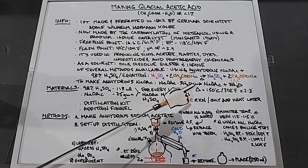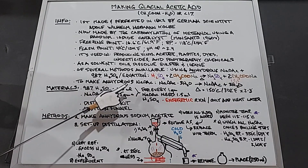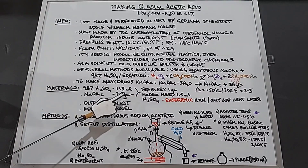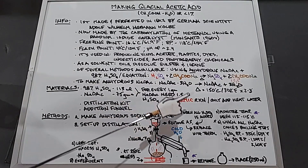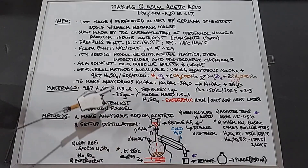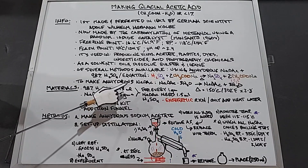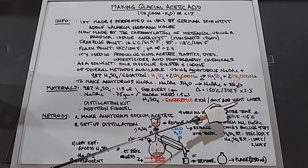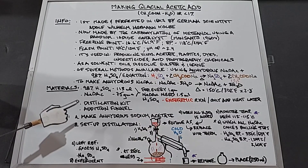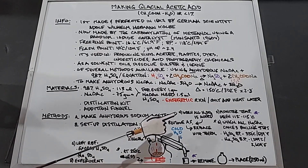The materials we need are 98% sulfuric acid — 113 milliliters — and 75 grams of anhydrous sodium acetate. Essentially, for every one gram of sodium acetate anhydrous, you need 1.5 milliliters of H₂SO₄. When you mix these two together you get a very exothermic reaction, so we'll only add heat later in the experiment. We also need a distillation kit and an addition funnel.